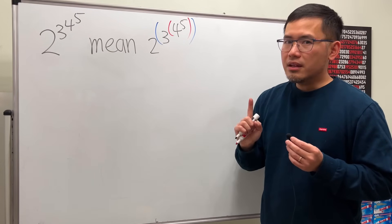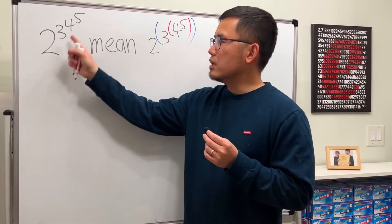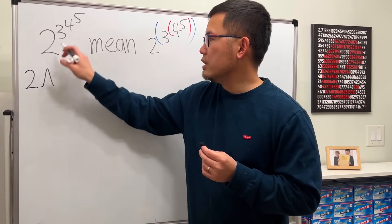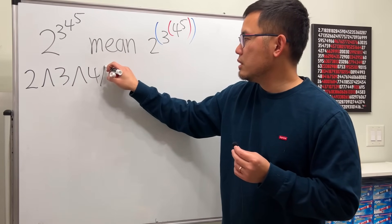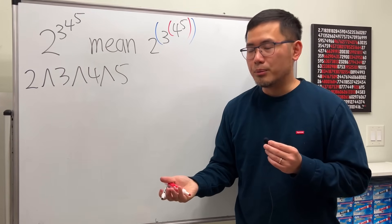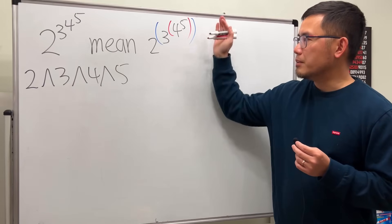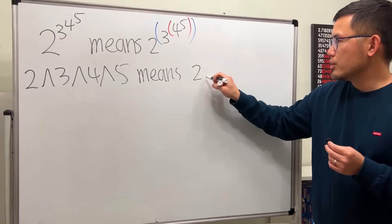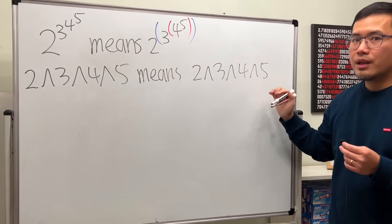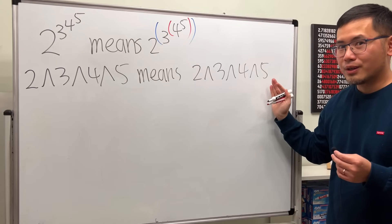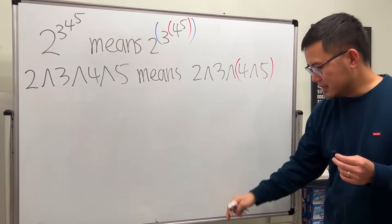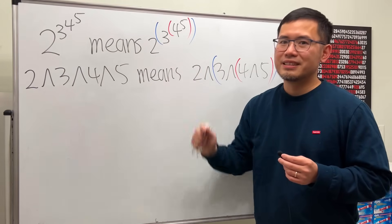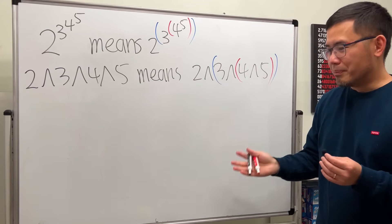Confusion comes from when we want to enter this into computer software or a calculator. To do so you use the caret key — 2 to the third to the fourth to the fifth. How does computer software interpret this? It's the same: 2 to the third to the fourth to the fifth. Here we actually have to work it out from right to left — do this first, then that, then 2 to that power, which is equivalent.